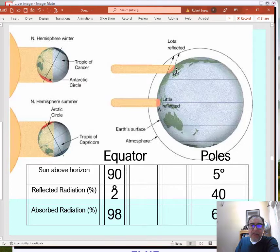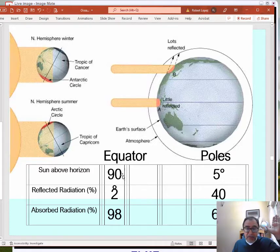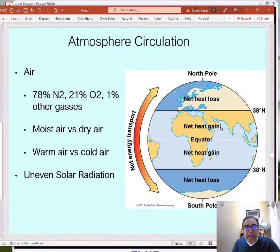It kind of does what the cartoon I was drawing. So at the equator, the sun is about 90 degrees overhead, directly overhead. Near the poles, it's basically on the horizon at five degrees above the horizon. Which means at the equator, 2% bounces off, but 98% is absorbed. So high percentage of absorption. Whereas at the poles, 60% absorbed, 40% bounces off. So in essence, there's going to be a net heat loss at these higher latitudes.